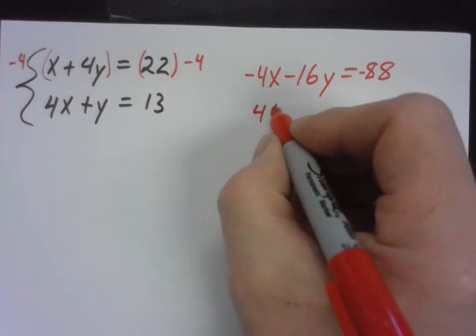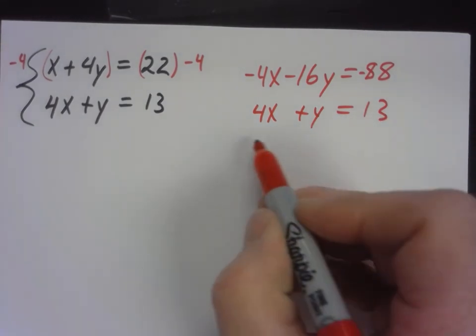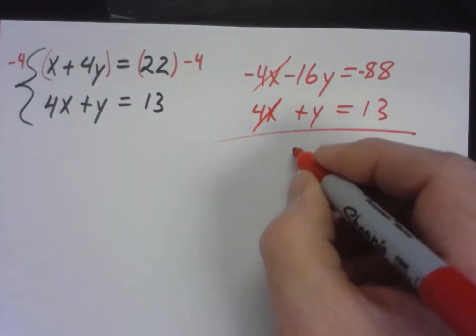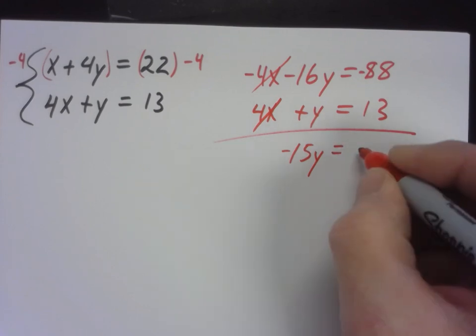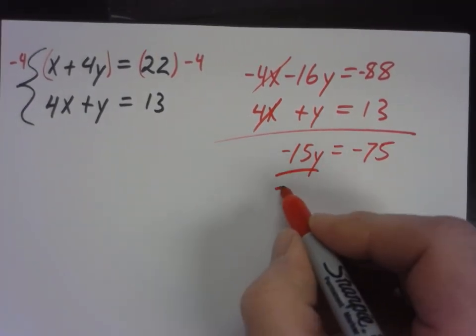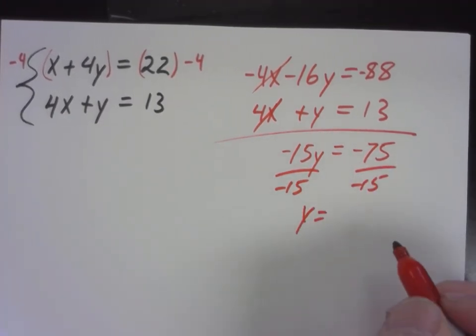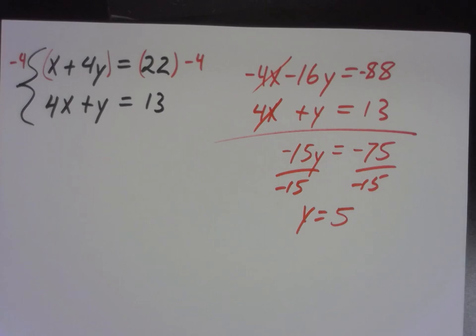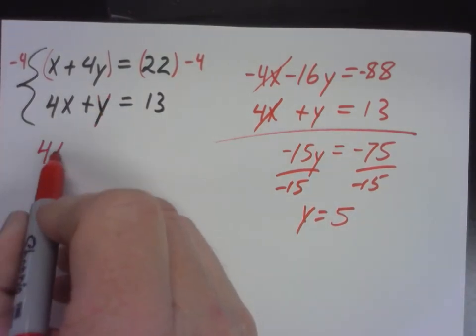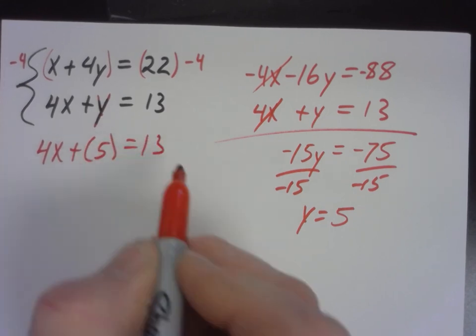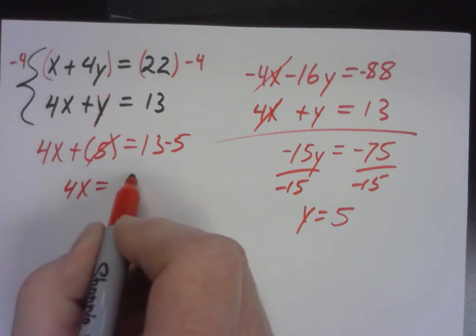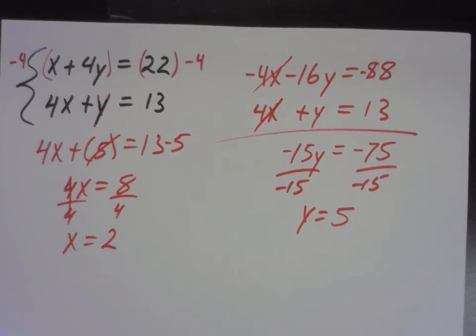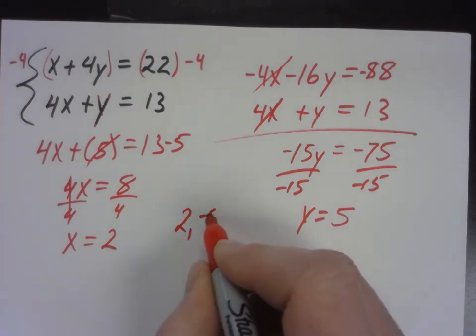I'm going to multiply the top equation by negative 4, so negative 16y equals negative 88, and then I'm going to leave the bottom equation the way it is. So that way my x's are eliminated, they add up to 0. I get negative 15y equals negative 75. And then I can divide by negative 15, and I know my answer is positive. Positive 5. And then, let's see, I guess I can just put that right here. 4x plus 5 equals 13. So 4x equals 8, and that means x equals 2.